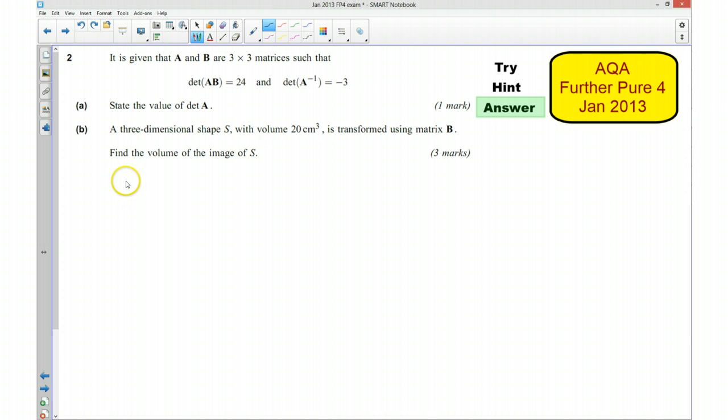So if I write down that the determinant of the inverse of A is going to be equal to 1 over the determinant of A. So we know that's going to be minus 3. So determinant of A is going to be equal to minus a third.